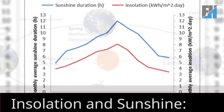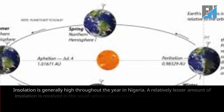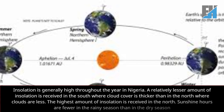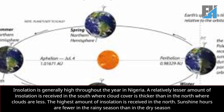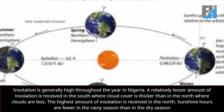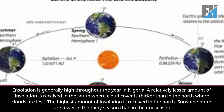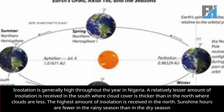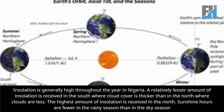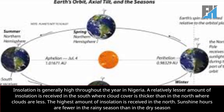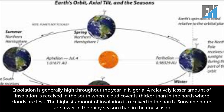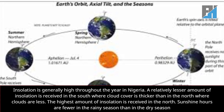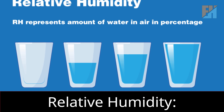Insolation and sunshine: insolation is generally high throughout the year in Nigeria. A relatively lesser amount of insolation is received in the south, where cloud cover is thicker than in the north where clouds are less. The highest amount of insolation is received in the north. Sunshine hours are fewer in the rainy season than in the dry season.